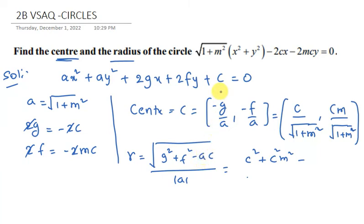Actually, c is 0 here for this circle. The denominator mod a means square root of 1 plus m squared.